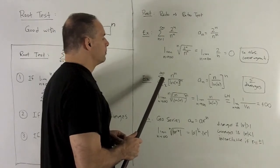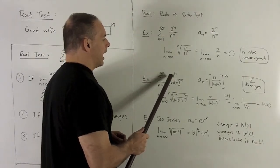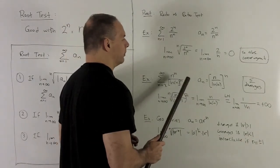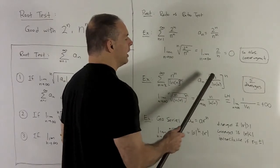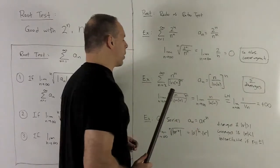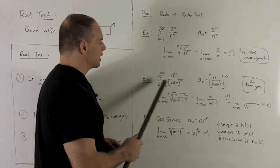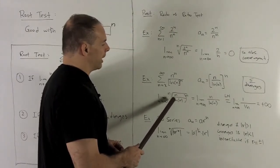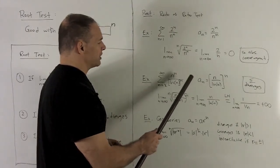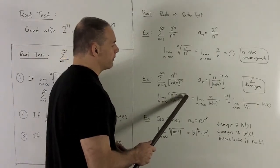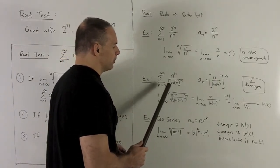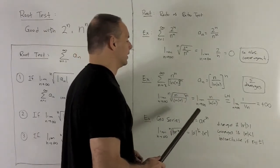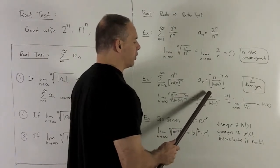Let's try another one: the sum from n = 2 to infinity of n to the n over the natural log of n to the n. We can rewrite a sub n as n over the natural log of n, raised to the nth power. Applying the root test, we take the nth root of a sub n, which means raising to the 1 over n power — that cancels the outer exponent n, leaving just n over natural log of n. So we're looking at the limit as n goes to infinity of n over natural log of n.